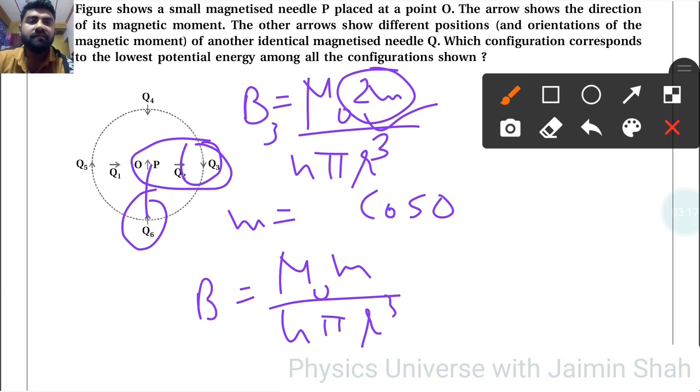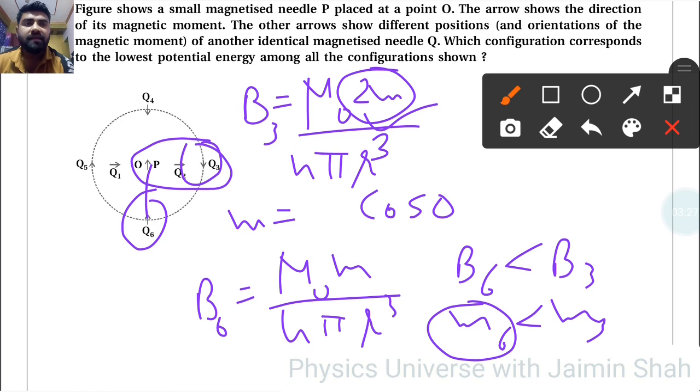So this is for B3 and this is for B6. Now B6 is less than B3, so obviously M6 is less than M3. Because of least magnetic moment, this M6—now corresponding formula is U = -MB cos θ.